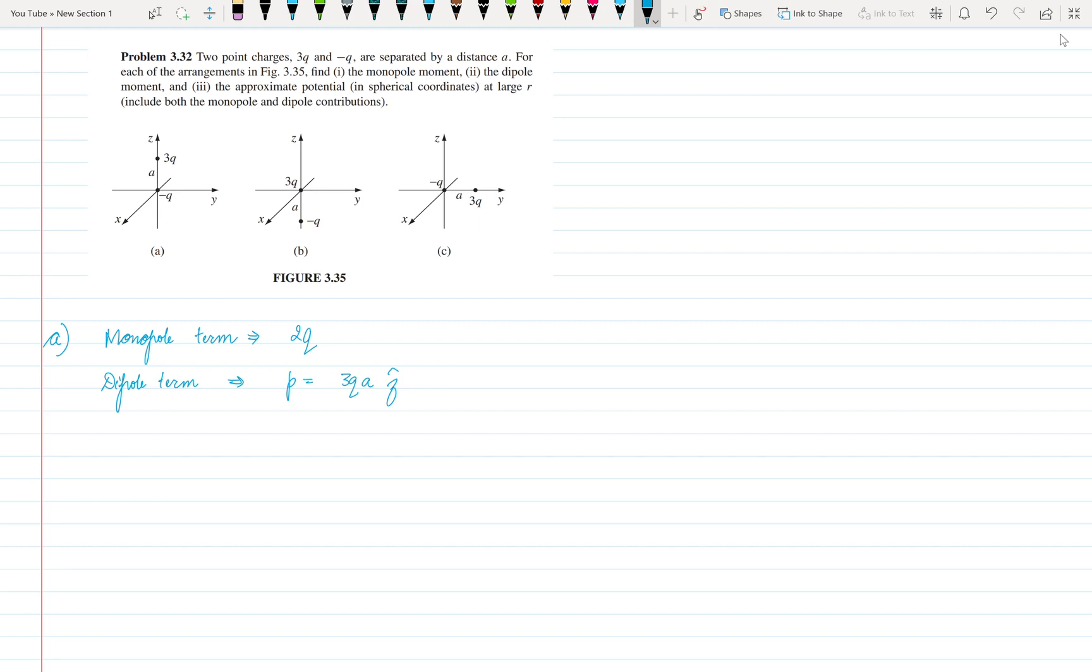Now the approximate potential. The potential here will be the potential due to monopole term plus potential due to dipole term. So it is given by 2Q upon 4 pi epsilon naught R because the potential in the formula is for the point charges KQ by R. I hope you very well know that.